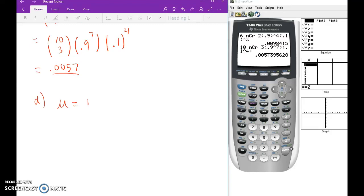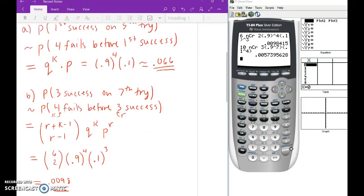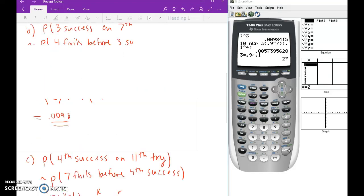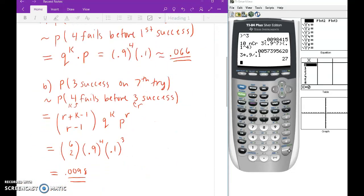So the mean for the negative binomial is rq divided by p. Again, you don't have to memorize these formulas, don't forget. They're on the formula sheet. All right, so r in this case was 3, q was 0.9, and p is 0.1. All right, so 3 times 0.9 divided by 0.1. All right, that's 27, which by the way means, on average, you're going to need to drill 27 times before you find your third success. That's what that's saying.